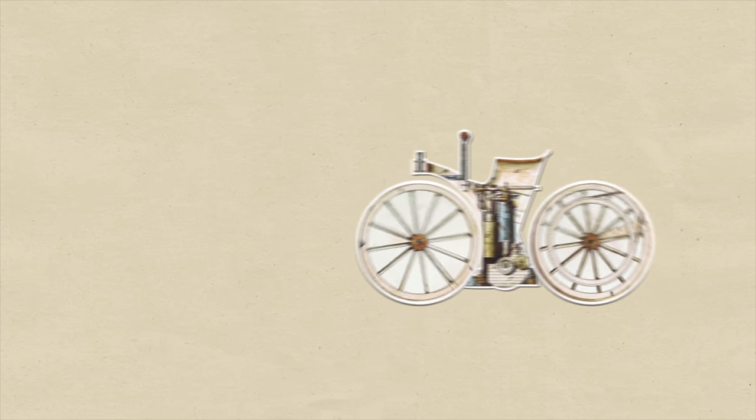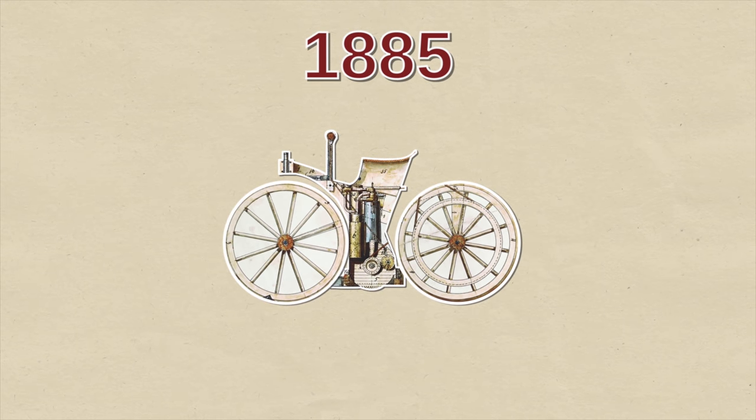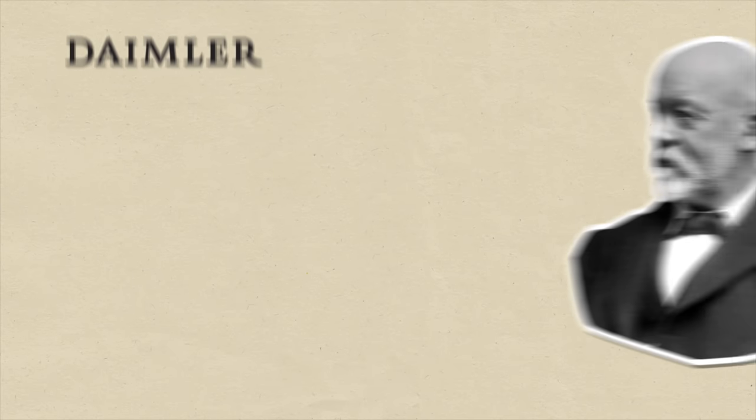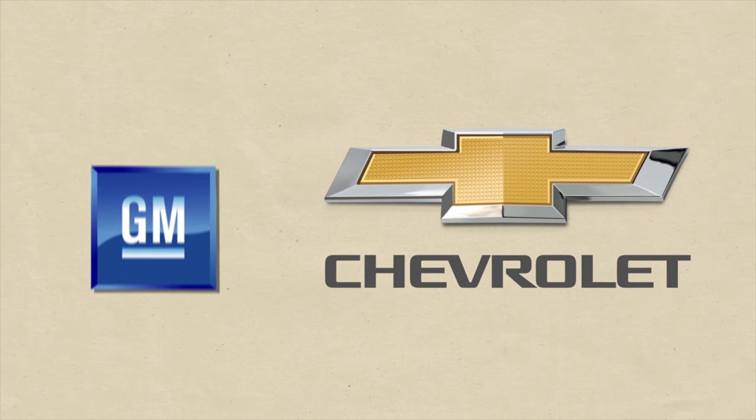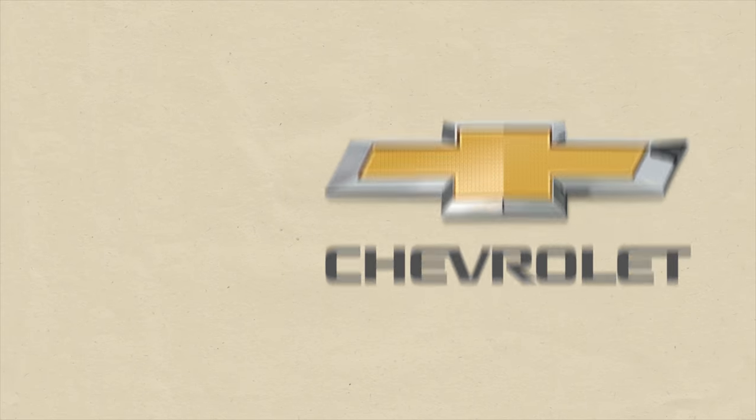The first internal combustion petroleum fueled motorcycle was the Daimler Reitwagen built by Gottlieb Daimler, the same man who founded Daimler. Many of these brands were being exported to Japan before the war and there were also Japanese manufacturers in the local market.